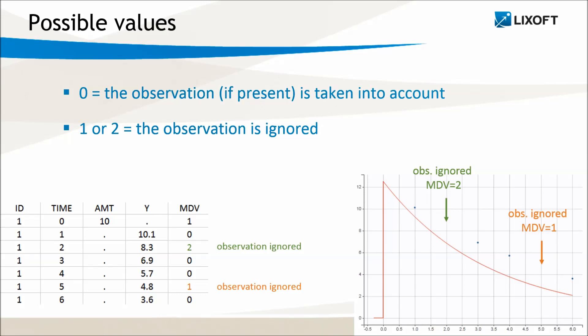Zero means that the observation, if present, is taken into account, and one or two means that the observation is ignored. The value two is accepted for compatibility with the MDV column of NONMEM, but it will not generate a prediction at that time point.